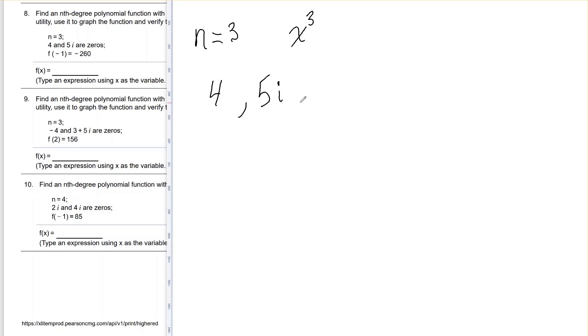And what they don't tell us is that negative 5i must also be a zero because conjugate roots come in pairs. If 5i is a root, then negative 5i has to be a root as well.